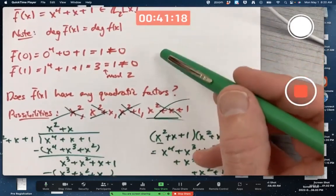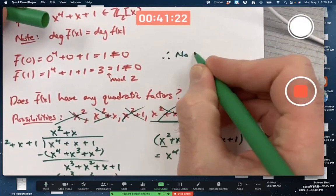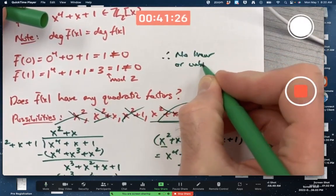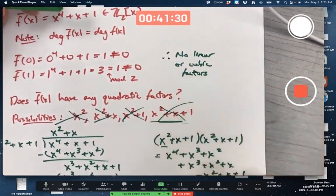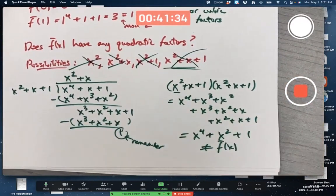And you should briefly say there's no linear factors or cubic factors. No linear or cubic factors here. And then down here, you'd want to also say it's got no quadratic factors.